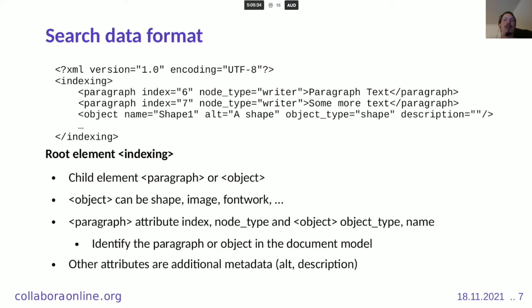The paragraph element has important attributes: index, node type, and additionally object name. With these, we can identify which paragraph we are searching for inside the document model in LibreOffice. For objects, the important attributes are object type and name. The name is always uniquely identified, so we can always identify each object inside the document just with the name. We also export additional metadata such as alt text and description of the object.